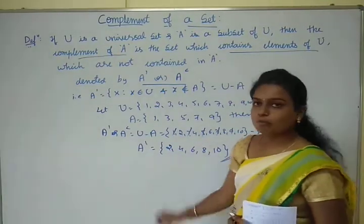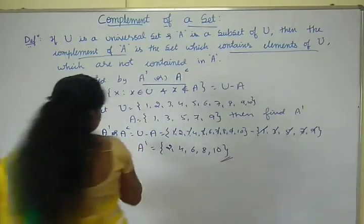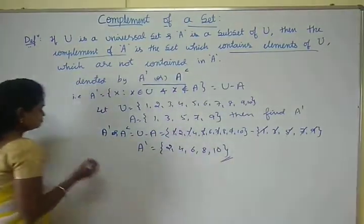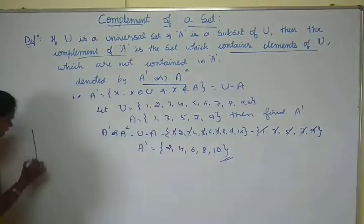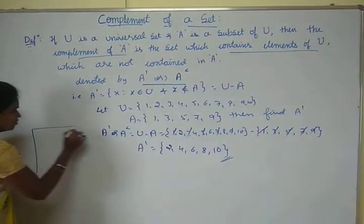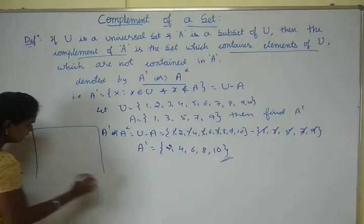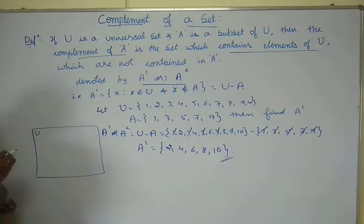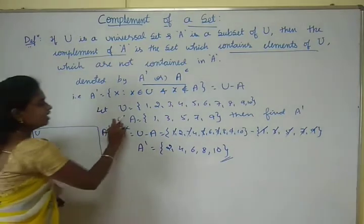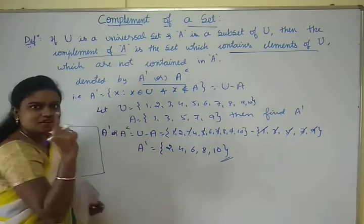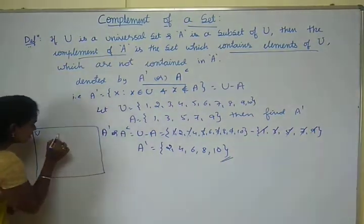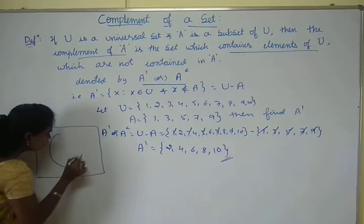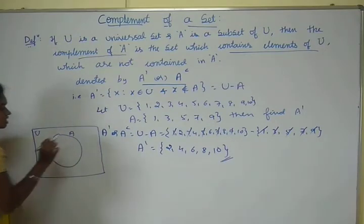This is A complement. Now, when we draw the Venn diagram for the complement, first we draw a rectangle which represents the universal set U. And since we have only one set A, we draw only one circle which represents the set A.